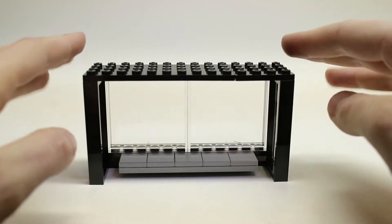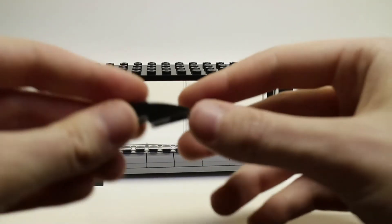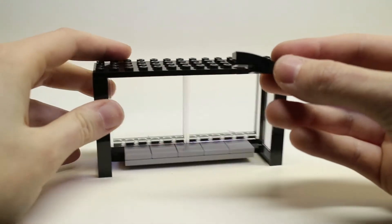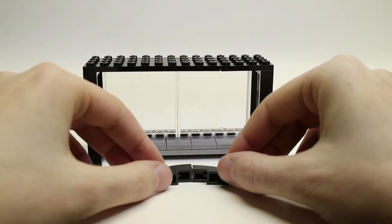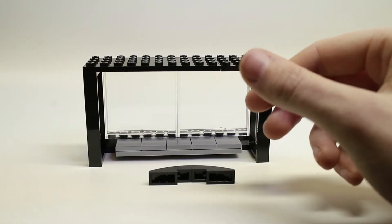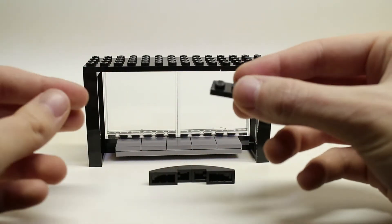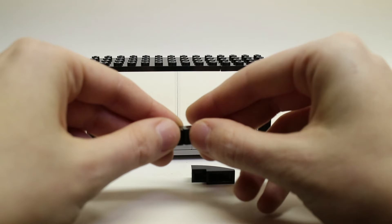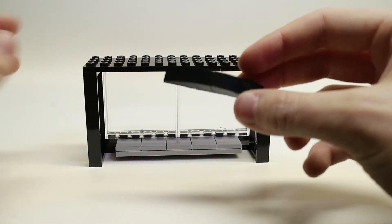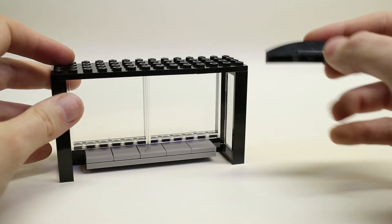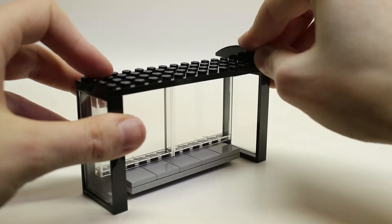Next you're going to want to take your sloped pieces, two of them, place them together like so and connect them together with a 1 by 2 black plate. You're going to want to make two of these similar pieces and place them at the end of the bus stop.